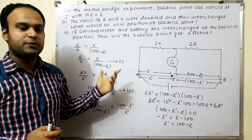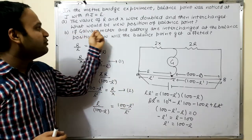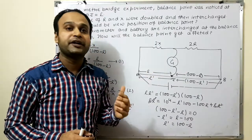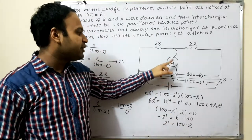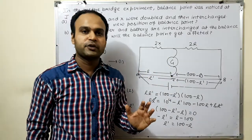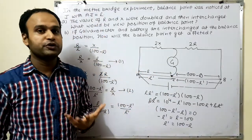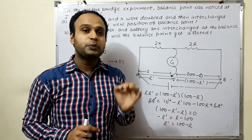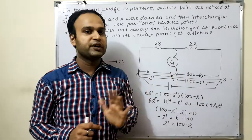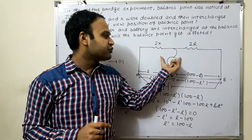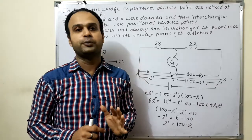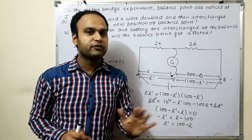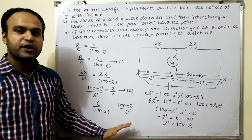Second part is a simple conceptual question. If galvanometer and battery are interchanged at the balance position, how will the balance point get affected? If I place the galvanometer here and battery there, what will be the effect on the position of the null point? There is no effect on the position of the null point. Because at the position of null point, no current flows through the galvanometer. So you can connect anything there. There is no effect on the position of null point. Clear?